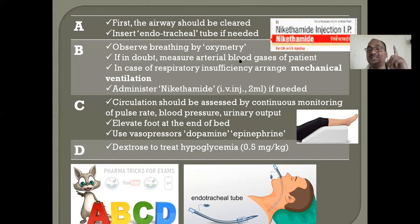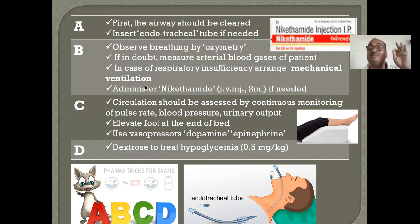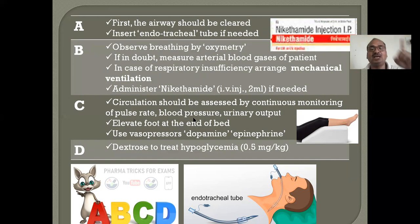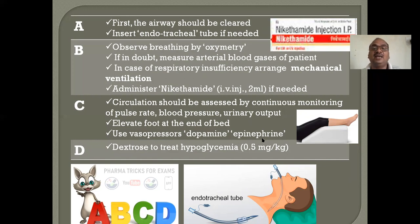B means breathing — observe the breathing by oximetry. If any doubt, measure the arterial blood gas pressure in the patient. In case of respiratory insufficiency, arrange mechanical ventilation — artificial ventilation. Administer nikitamide injections if needed. C — circulation is very important. Blood circulation throughout the body is important, assisted by continuous monitoring of pulse rate, blood pressure, and urinary output. Elevate the foot on the bed to improve circulation. Use vasopressors such as dopamine and epinephrine. D — use dextrose to treat hypoglycemia.